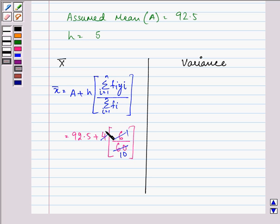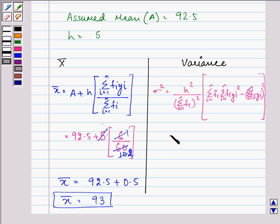So we have on calculation the value of mean as, sorry, here H was not 4 but 5. So it is 92.5 plus 0.5, giving us 93 as mean. Now we need to calculate variance, and now substituting,